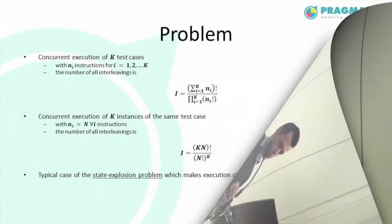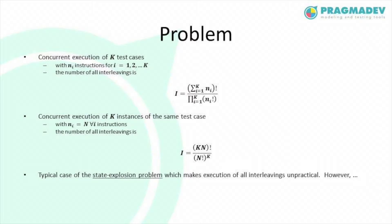From a rapid analysis of the problem, if we consider the concurrent execution of K test cases with MI instructions each and want to execute them in parallel in a controlled environment, we must account for the whole interleaving of instructions across all test cases to cover all possible scenarios. The number of such interleavings is given by the formula BI shown in the slide.